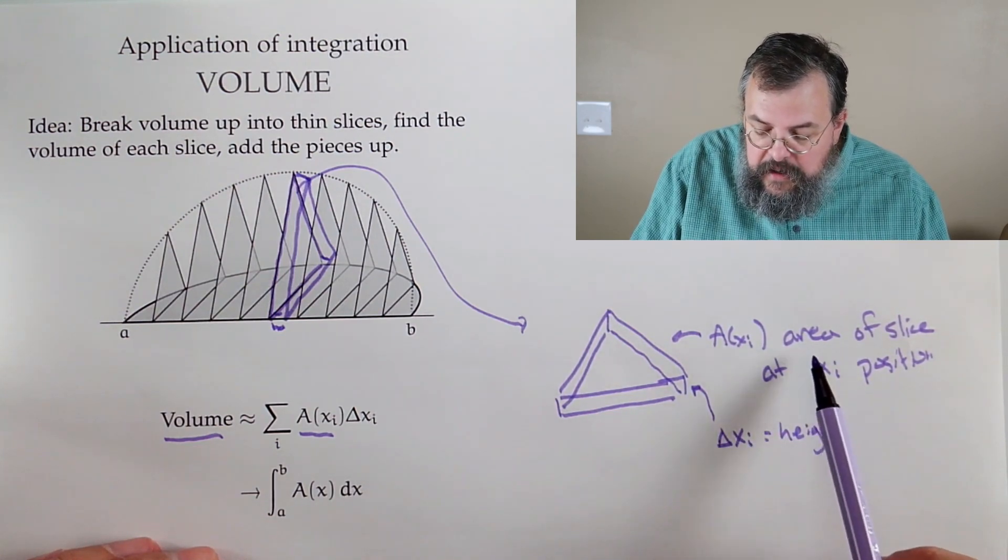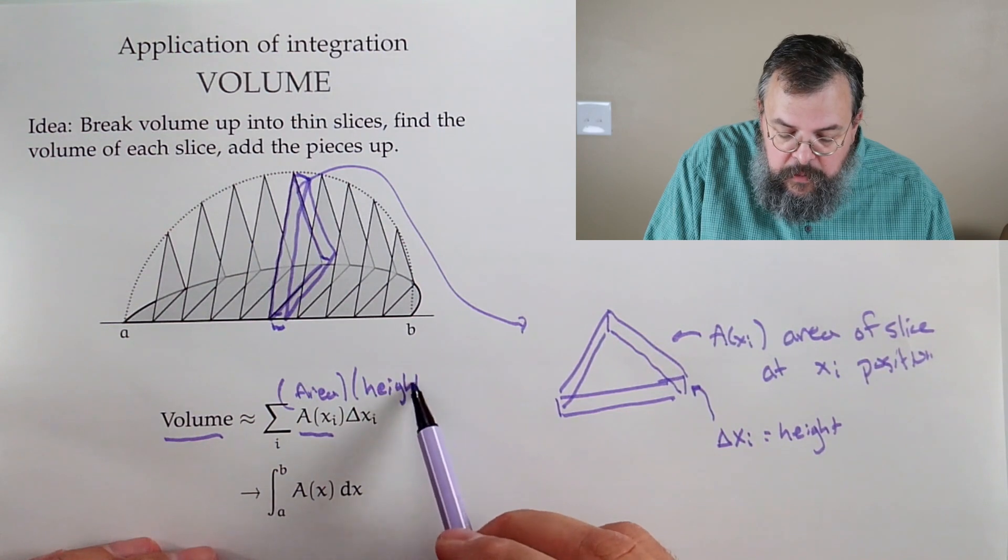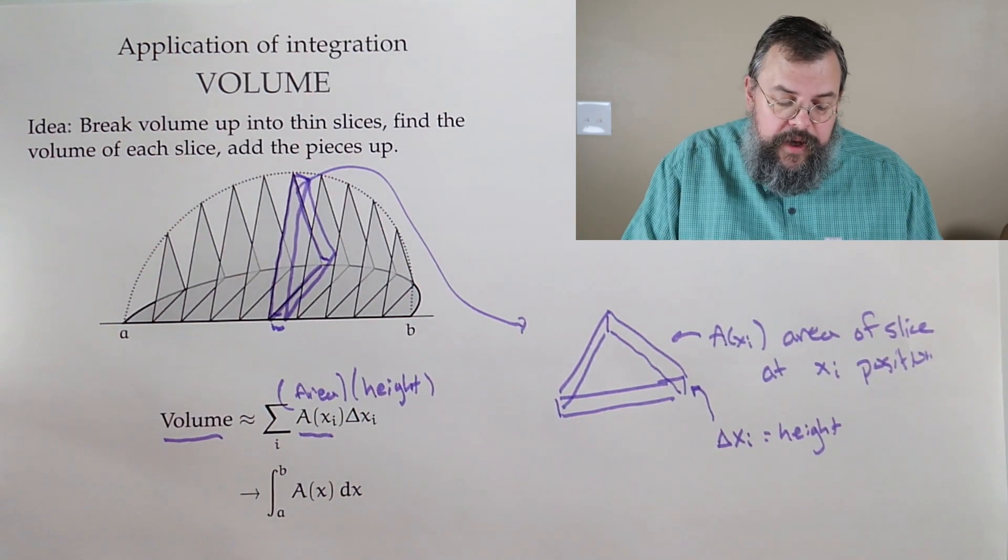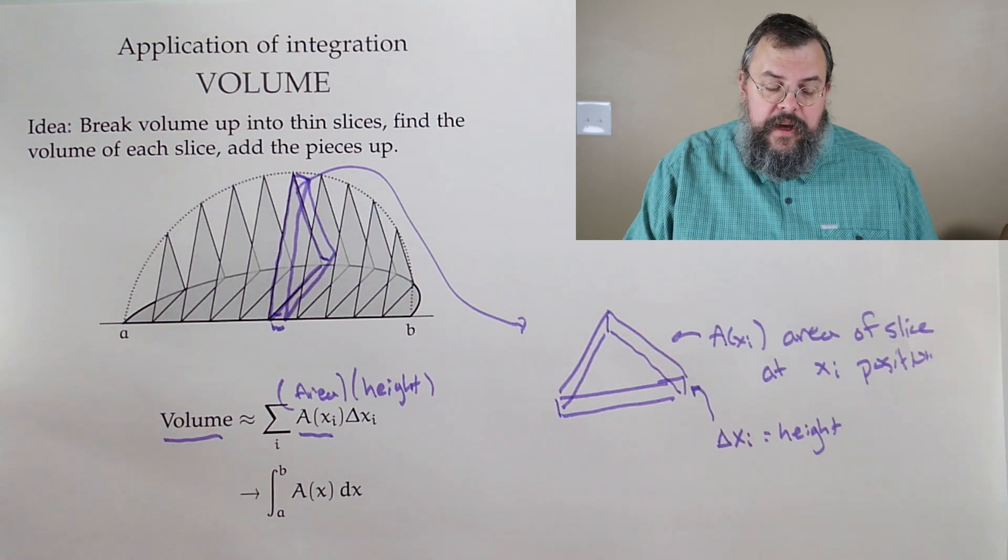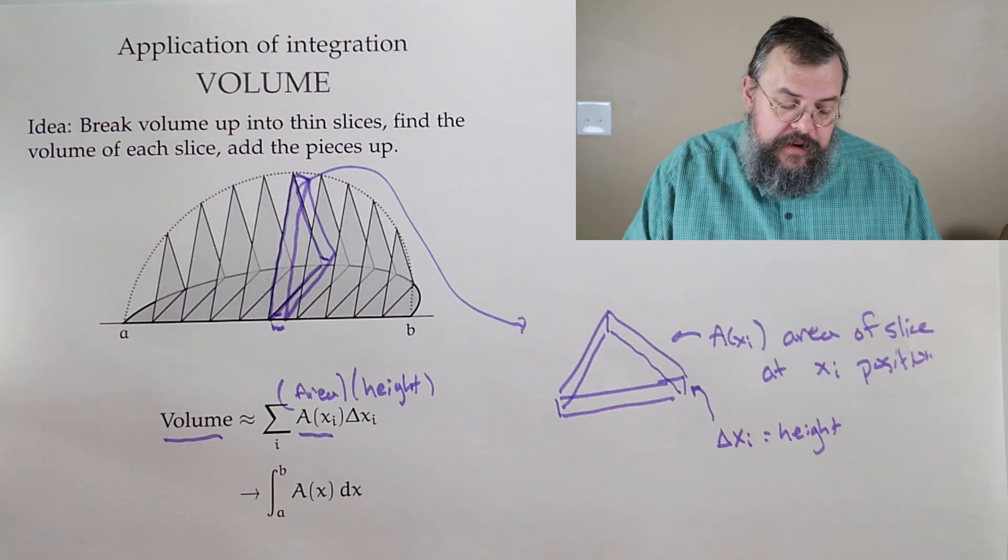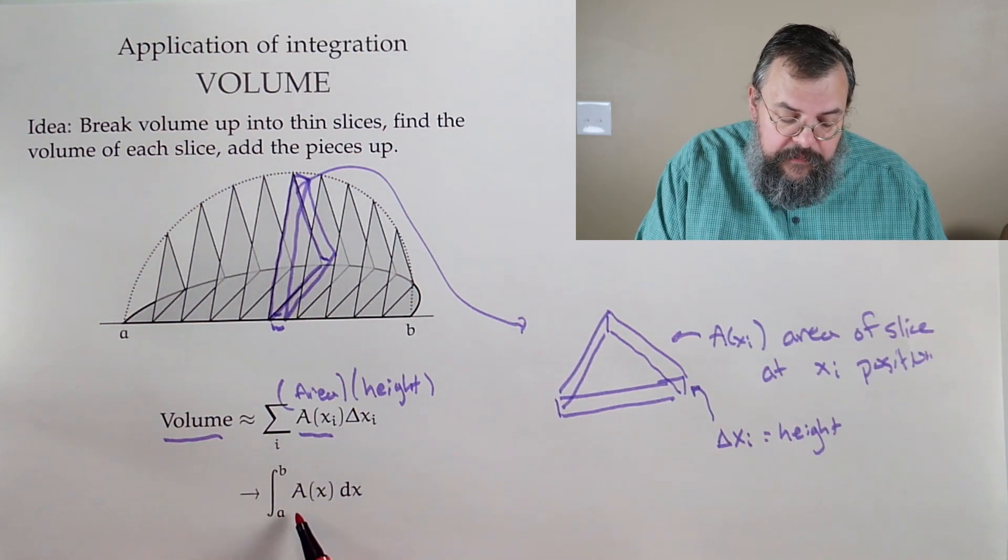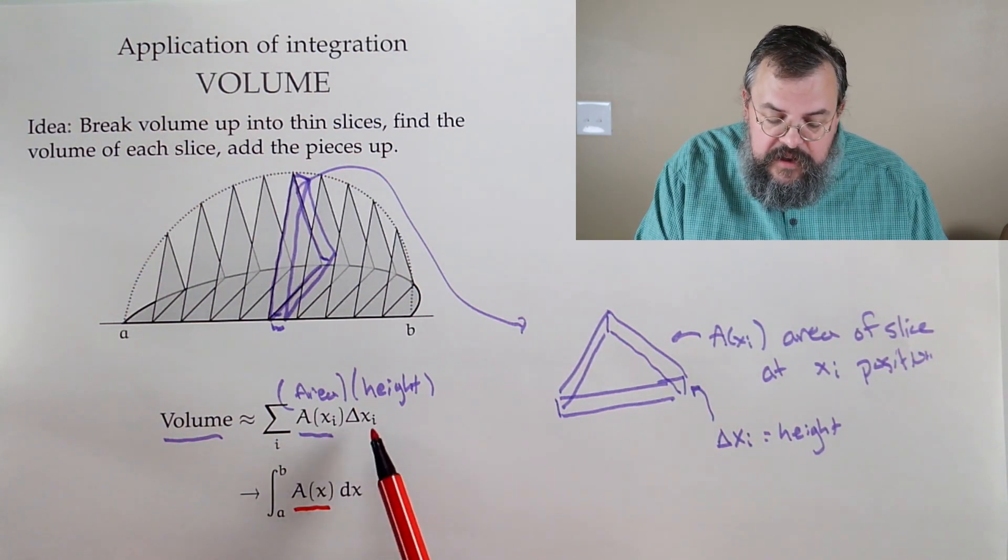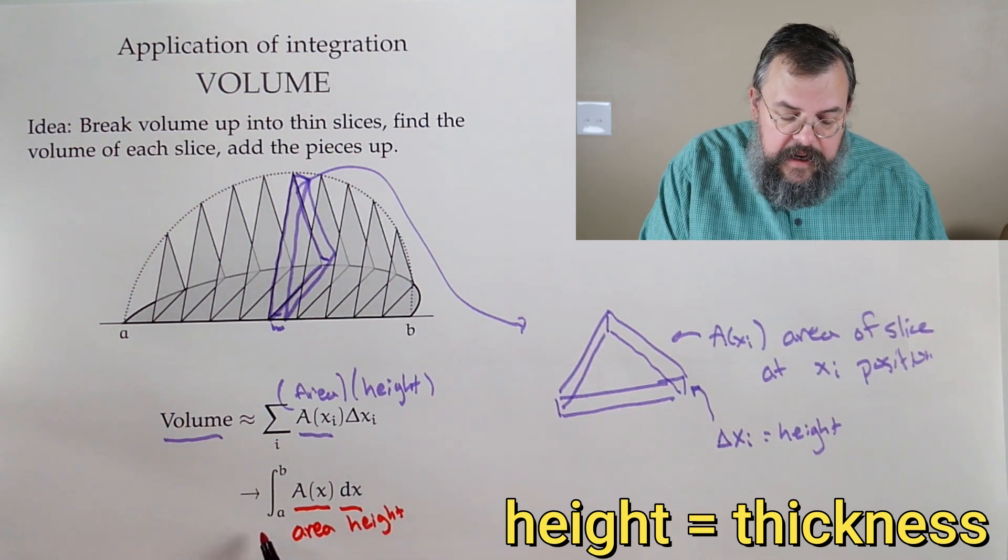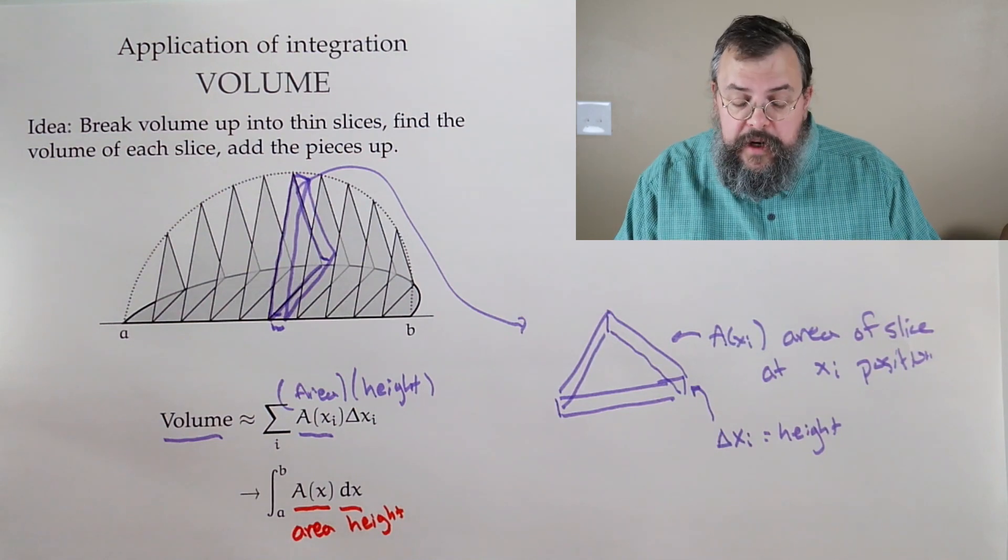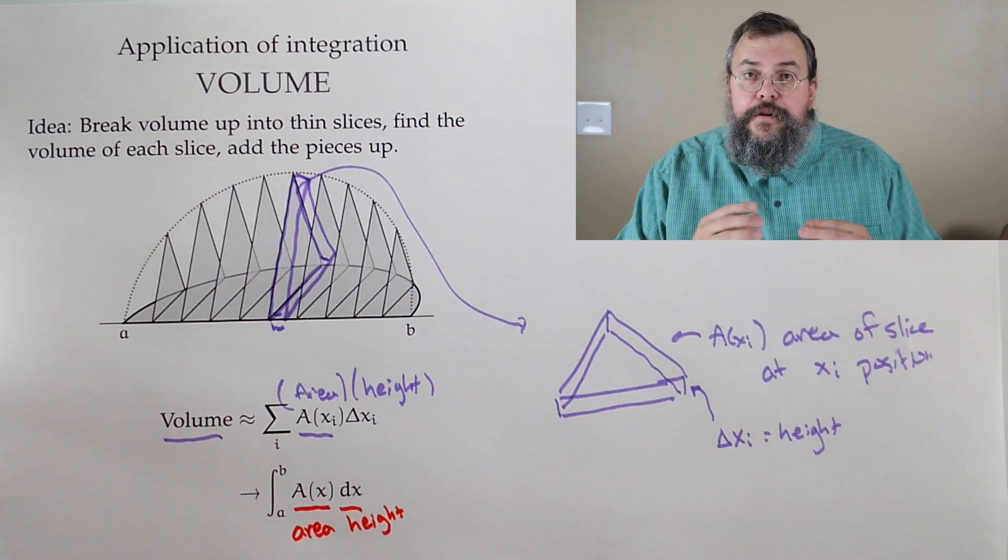If you take an area times a height, lo and behold, what do you get? A volume. We're taking our little individual slices and we add them together. Therefore, we get that in the limit, this becomes an integral. Integrals are just a way of saying add things up. The area of each slice, that's the A of x, and the width of each slice, that's our dx. So area and height, add it up. That's the whole idea. Pretty simple, right? Once you understand what things represent, most applications in calculus do become pretty simple.